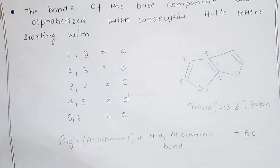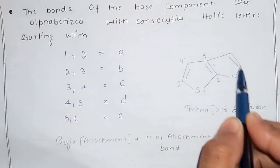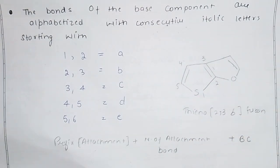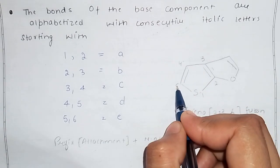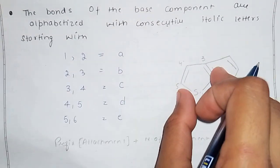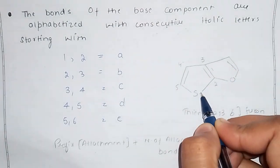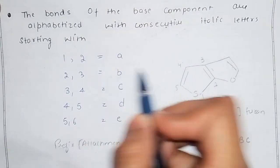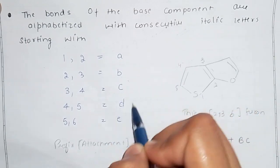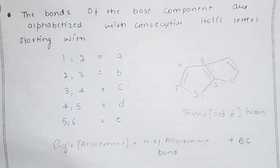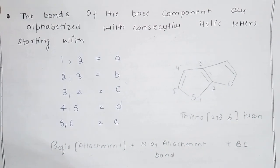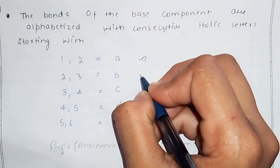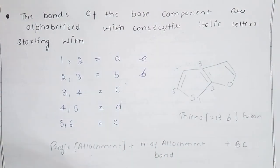If the bond is between atoms 1 and 2, we represent it as A. Between 2 and 3 it is B. Between 3 and 4 it is C. Between 4 and 5 it is D. Between 5 and 6 it is E. These bond labels are written in italic letters in the name.